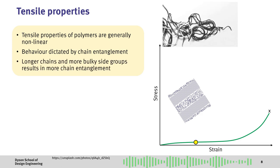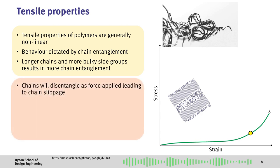Longer chains and more bulky side groups generally result in more chain entanglement. As force is applied to the polymer, the chains will start to slip past each other initially in the amorphous regions.